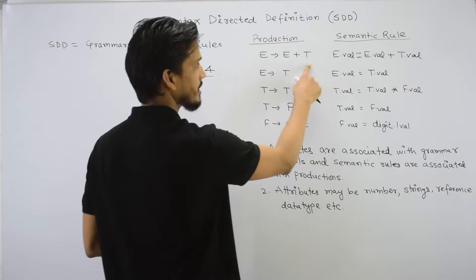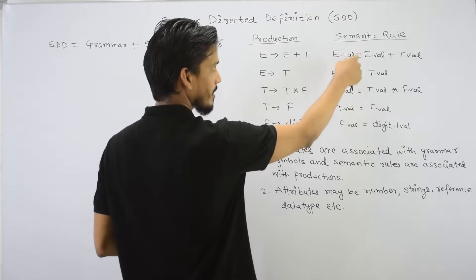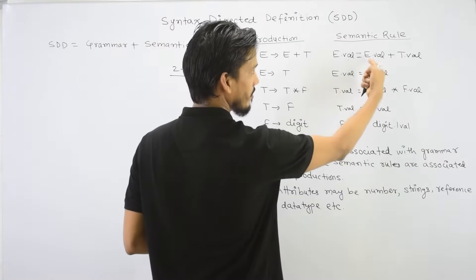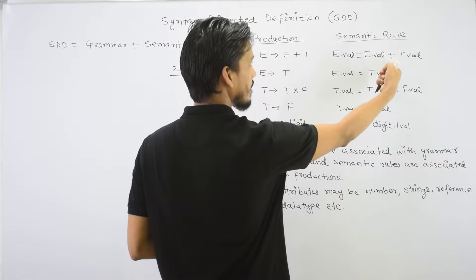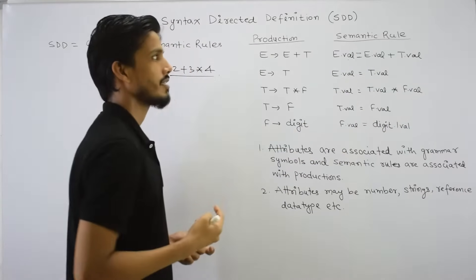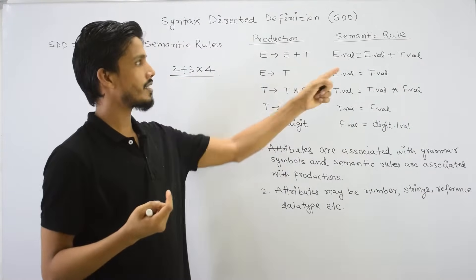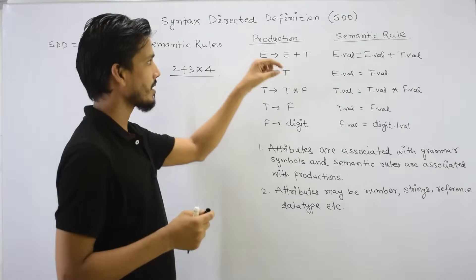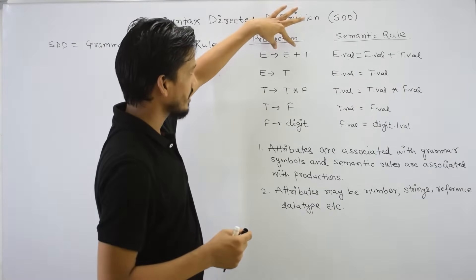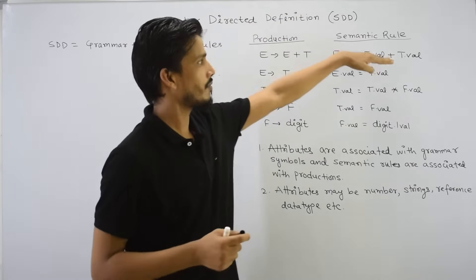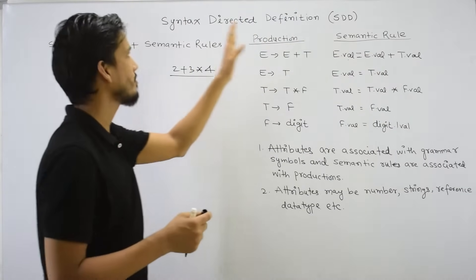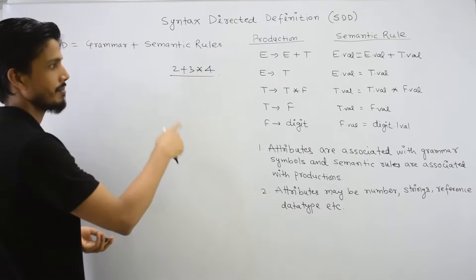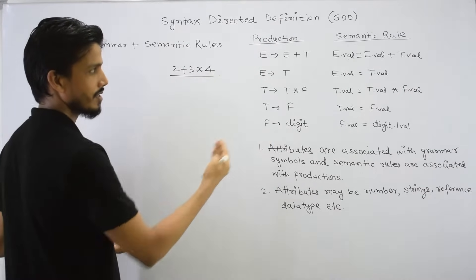E derives E plus T. The left-hand side of E — the value is calculated. E value is calculated and T value is calculated. This is the result of E plus T, meaning E plus T. This means the value of the production is defined here — what we call Syntax Directed Definition. Now, let's take a string and generate a parse tree to understand the internal details.